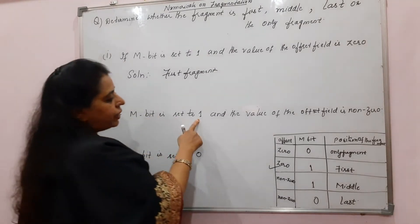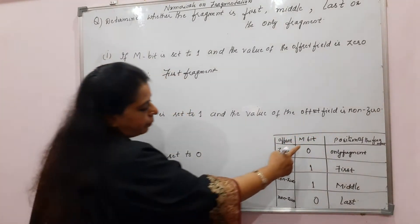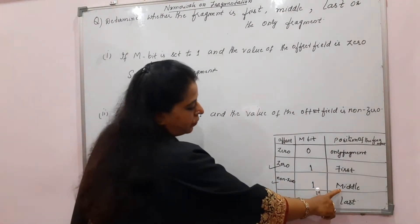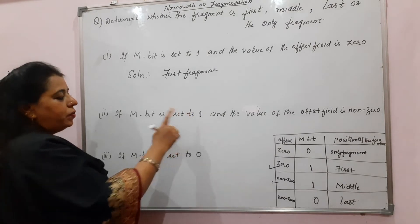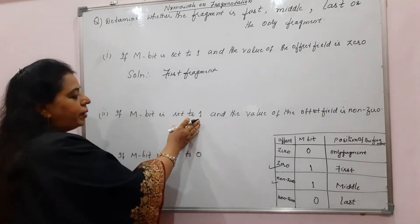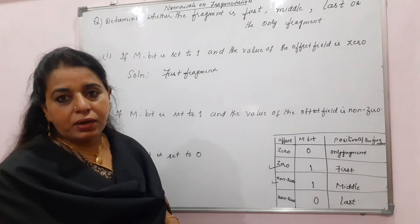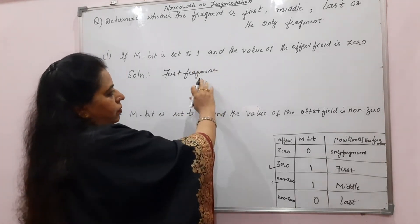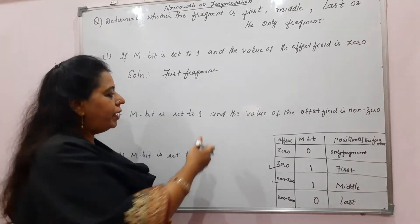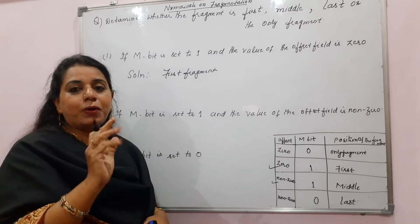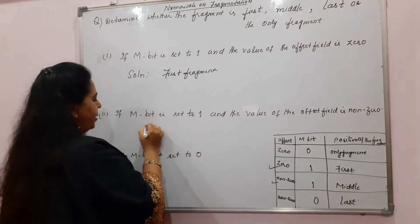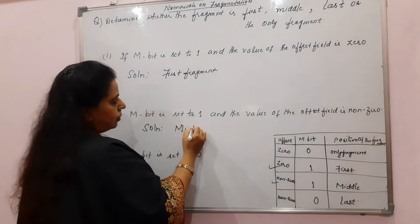Question 2: if M bit is set to 1 and the offset field is non-zero. This refers to the third row of the table — the middle fragment. M bit set to 1 indicates the packet is fragmented. Since the offset is non-zero, it is not the first fragment. The last fragment would have M bit 0, but here M bit is 1. So the answer is: this is the middle fragment.